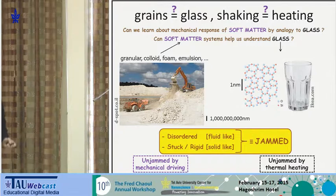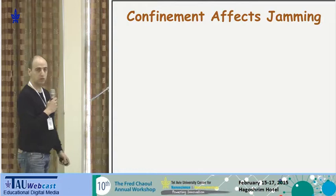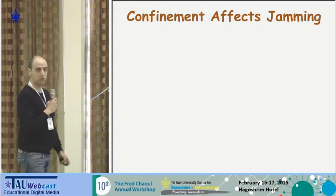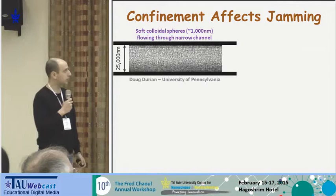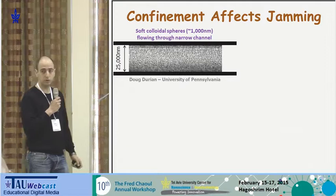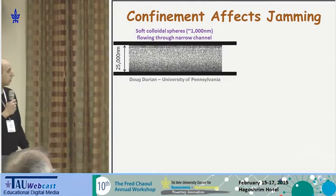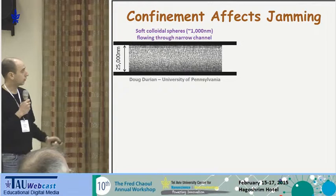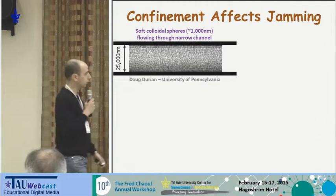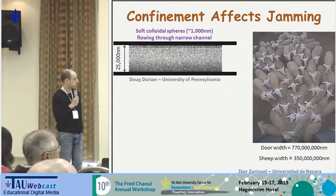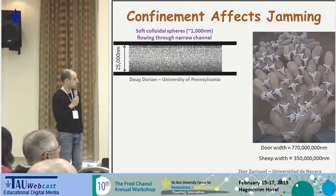Now I'll focus on the topic of my talk: how does confinement affect this jamming transition. There are all kinds of examples of amorphous systems in confined geometries. One is experiments from Doug Durian's lab at Penn of a colloidal suspension flowing through a rather narrow channel. There are related experiments by my Spanish colleague Iker Zorrigel of soft particles trying to flow through a narrow opening.